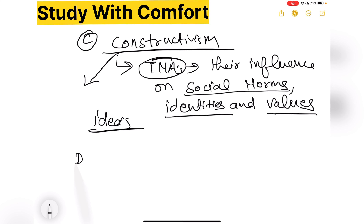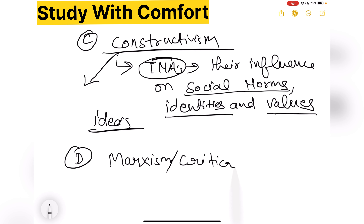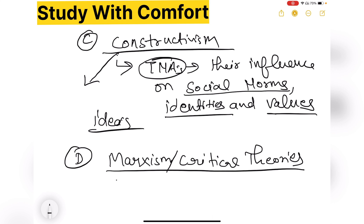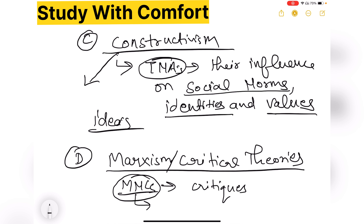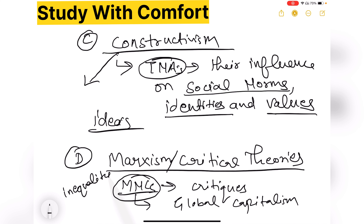एक और theoretical perspective है marxism — यह critical school of thought है। यह theories basically multinational corporations की critique करती हैं। Marxism capitalism को criticize करता है, और marxists कहते हैं कि जो MNCs हैं वो capitalism का world level पर extension हैं। ये global capitalism को बढ़ावा देते हैं और world में global inequality established करते हैं।